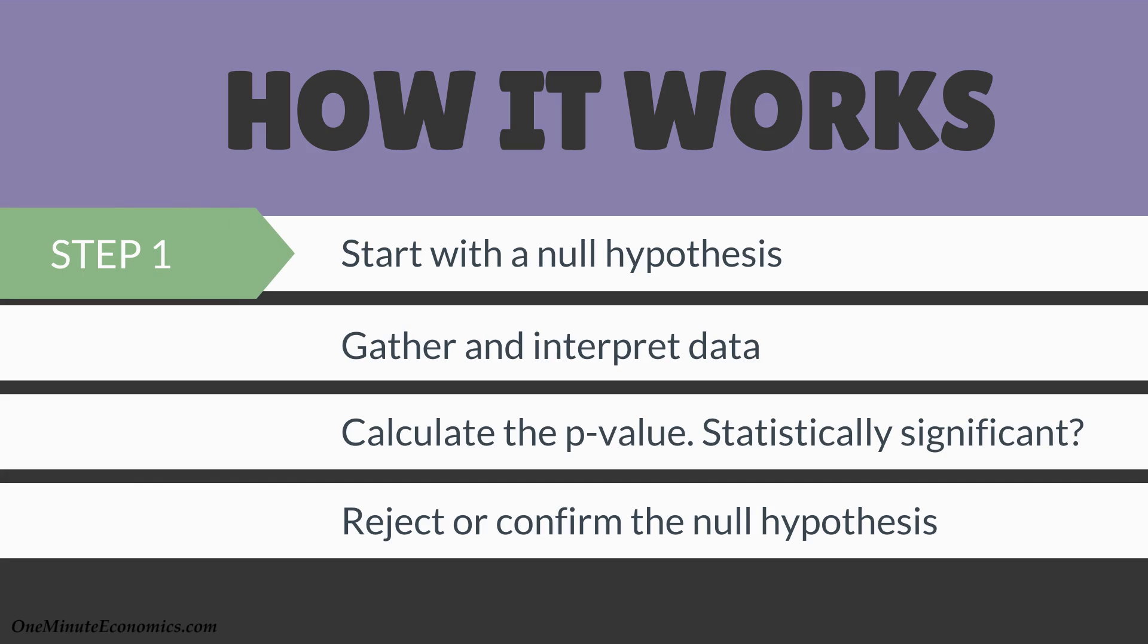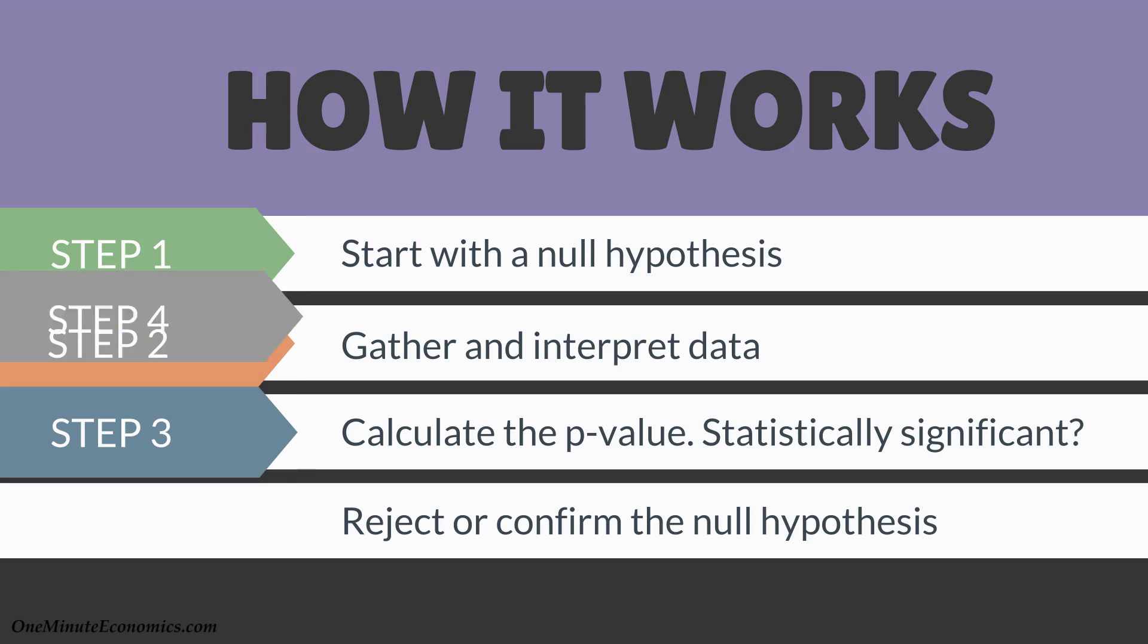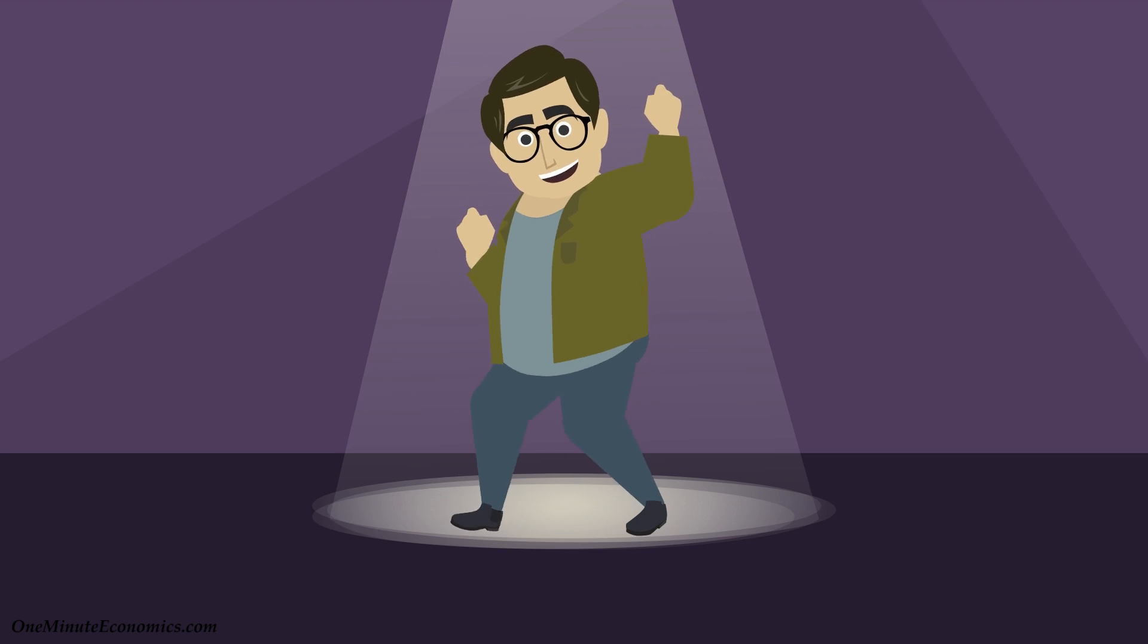All in all, here's how things work. 1. Start with a null hypothesis. 2. Gather and interpret data. 3. Calculate the p-value to determine if your findings are statistically significant. 4. If your data supports John's claim and the p-value is lower than .05, you will reject the null hypothesis, and John will be pleased.